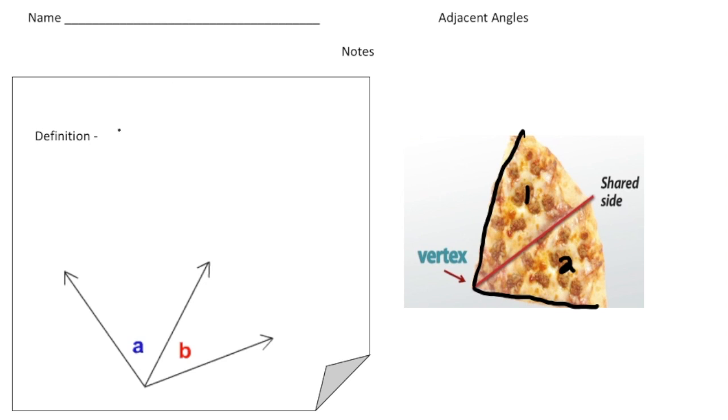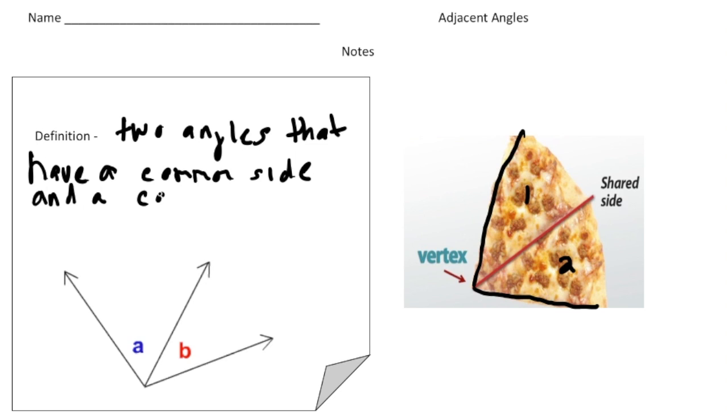So the definition of adjacent angles are two angles that have a common side and a common vertex. Down here we have angle A and angle B. Let's see if they're adjacent or not.